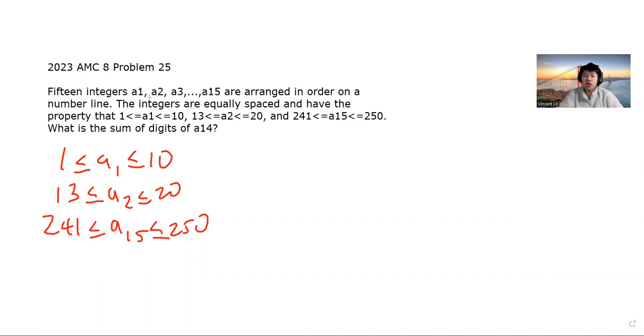The question reads: Fifteen integers A1, A2, A3, all the way through A15, are arranged in order on a number line. The integers are equally spaced and have the property that 1 < a1 ≤ 10, 13 ≤ a2 < 20, and 241 < a15 ≤ 250. What is the sum of the digits of A14?